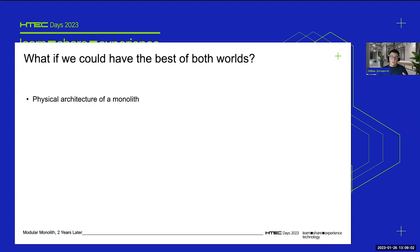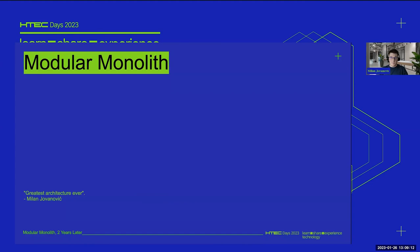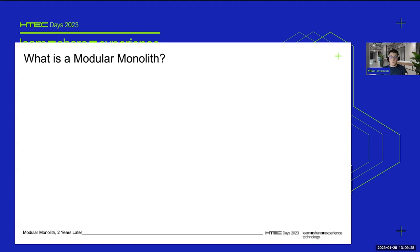What if we could take the physical architecture of a monolith and the logical architecture of microservices? It turns out that is possible and it's called a modular monolith. Now I'm going to discuss what a modular monolith is, what are the challenges of building one, and share some of the pain points I encountered while building one.